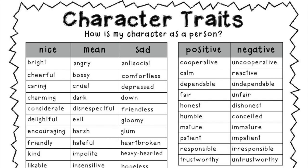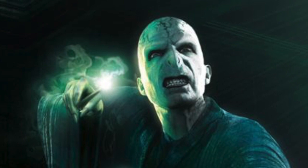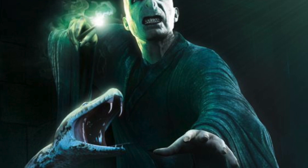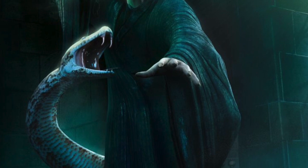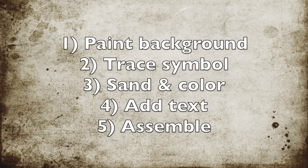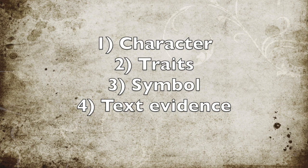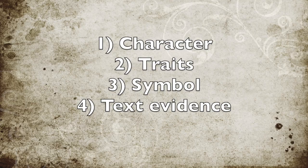Every character has character traits, and your job is to identify those traits. Think of something else — usually an animal or an object — that also has those traits. Then your portrait of the character becomes an image of that animal or object instead of the original character. This video will guide you through the art steps after you've identified your character, their traits, the symbol you want to use, and text from the book that supports the character trait you've identified.